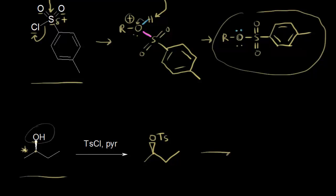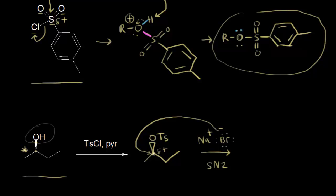If we went ahead and did a nucleophilic substitution reaction, we could add something like sodium bromide — Na⁺ and Br⁻. If this was an SN2 type mechanism, the bromide anion would attack this carbon, which is a little bit positive. We get nucleophilic attack from the bromide anion. In an SN2 type mechanism, you're going to get inversion of configuration. The formation of a tosylate just makes this process much easier.